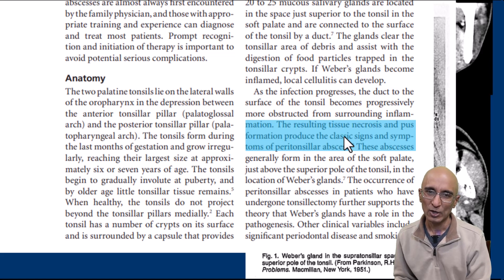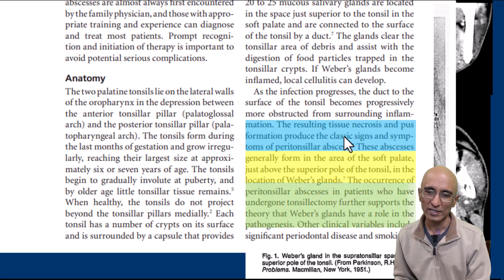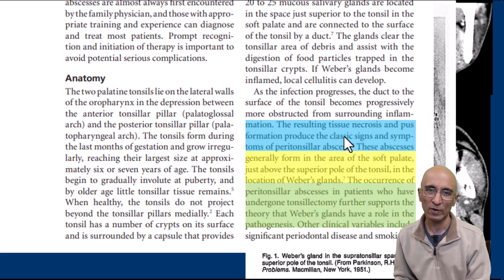Given the location of Weber's gland, this would explain why peritonsillar abscess is usually seen at the junction of the tonsil and soft palate along the superior aspect. This would also explain why peritonsillar abscess can be seen even in patients who have undergone tonsillectomy.